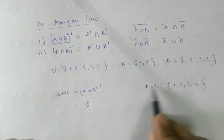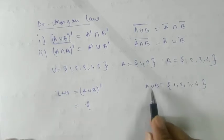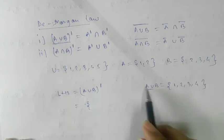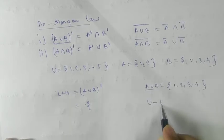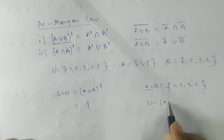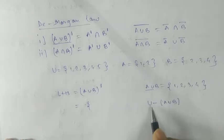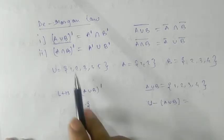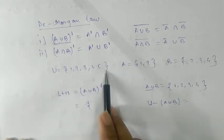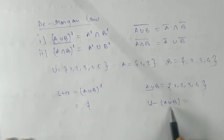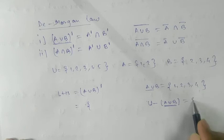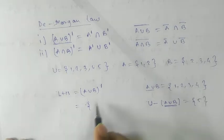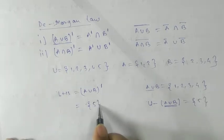Now take the complement of A union B. That means universal set {1, 2, 3, 4, 5} minus {1, 2, 3, 4}, which gives us {5}. So LHS equals {5}.